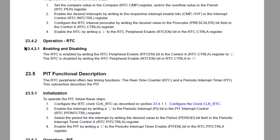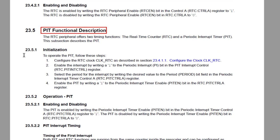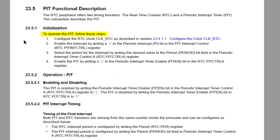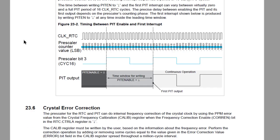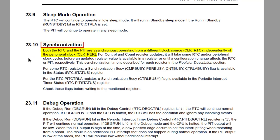Now let's also take a look at the PIT functional description — datasheet section 23.5. Under initialization: step one, configure the RTC clock, which is much the same as we just covered. Step two: enable the interrupt for the PIT in the PIT int control register. Step three: select the period for the interrupt in the PIT control A register. Step four: enable the PIT in the PIT control A register. Section 23.10 covers synchronization — both the RTC and PIT are asynchronous, operating from a different clock source to the peripheral clock, so control and count register updates take some RTC clock cycles to take effect. We should check the sync busy flags before writing to relevant registers.